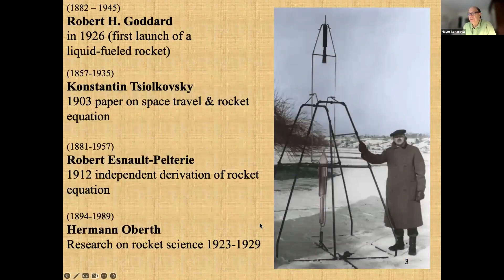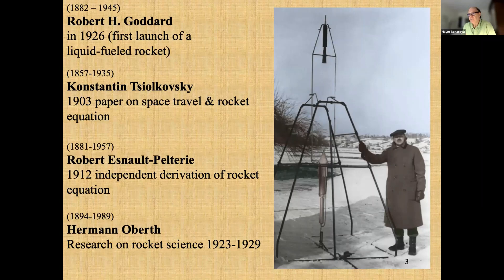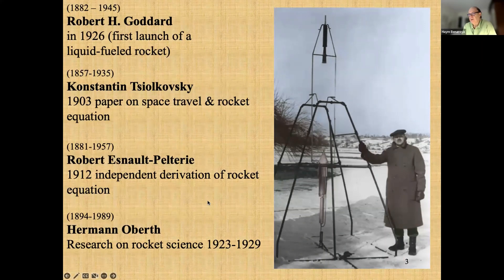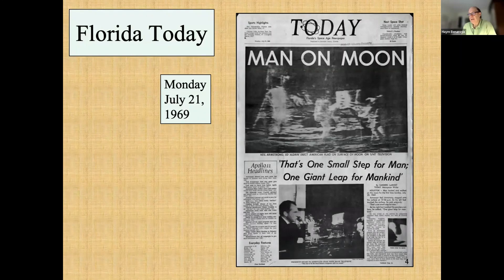Just a little bit of rocketry background. We have here four people among many who were pioneers in the rocketry era — from Robert Goddard to Konstantin Tsiolkovsky, Robert S. Peltier, and Hermann Oberth — all of whom jump-started our reach for the stars. And this image from July 21, 1969: those of us who are old enough will remember that day and remember where we were when these three men landed on the moon.